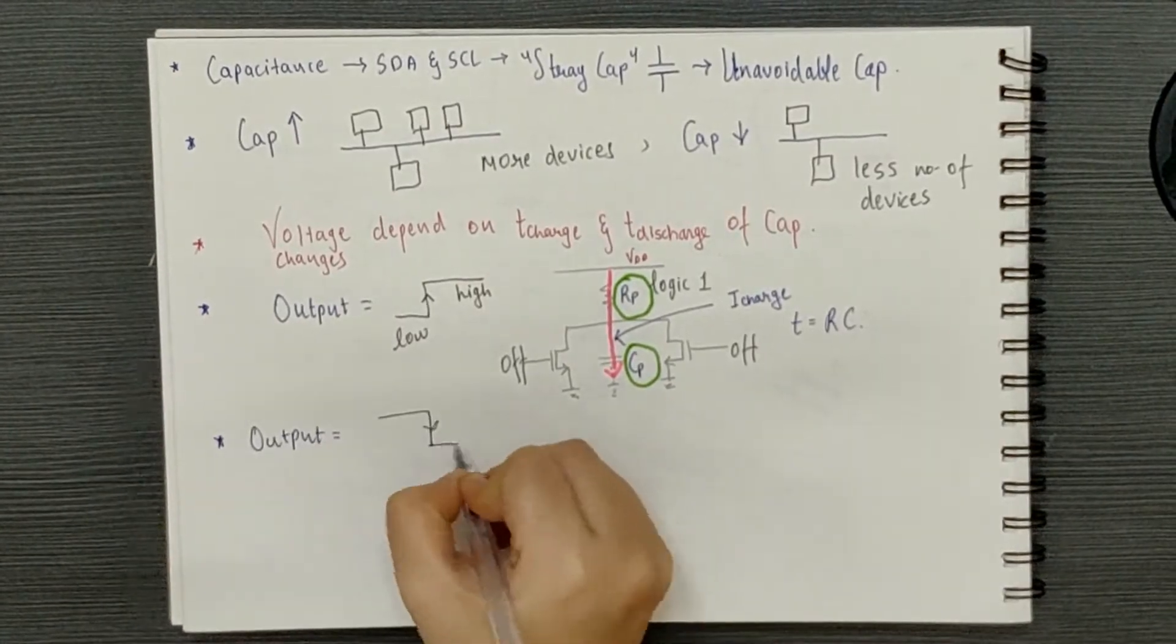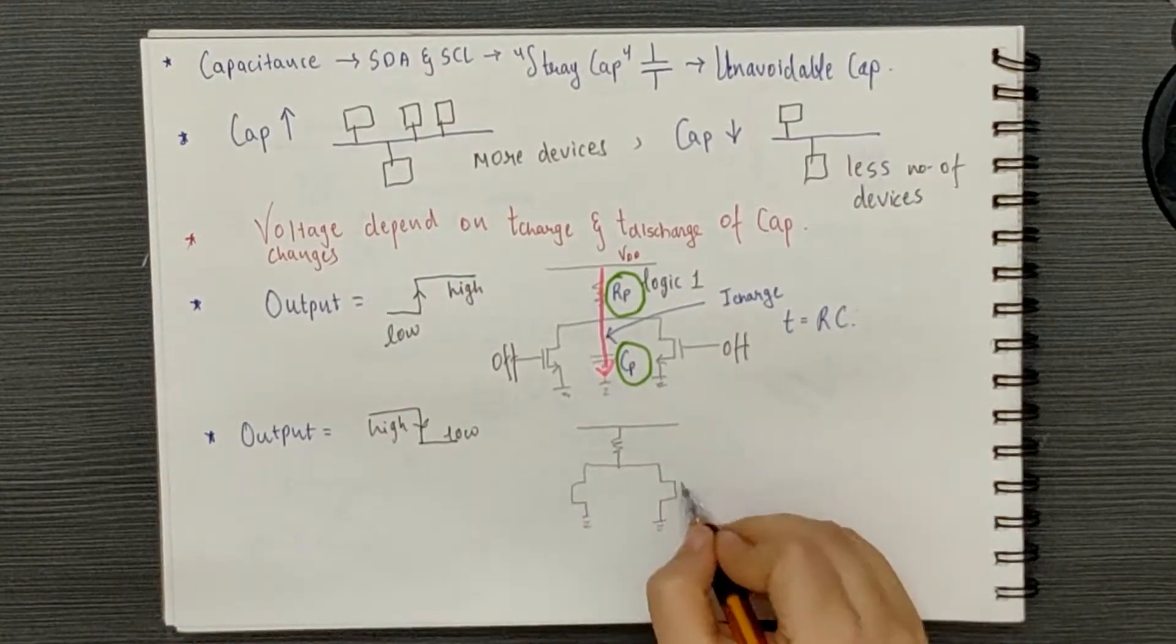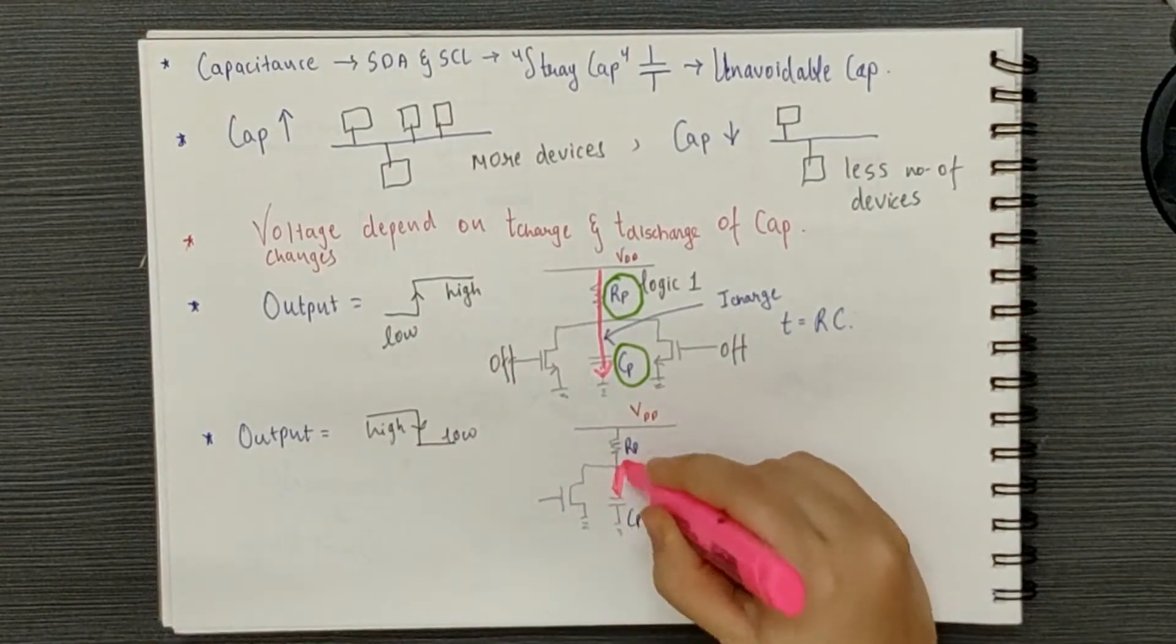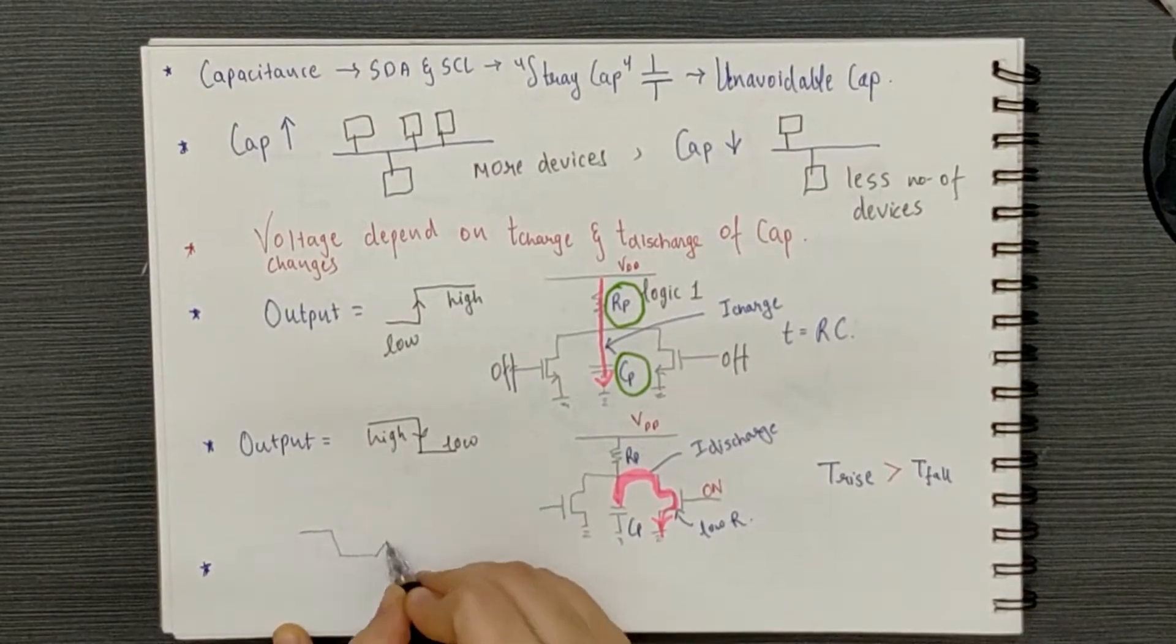Thus, obviously, the rise time will be significantly slower due to the high value of pull-up resistor than the fall time which is dependent on the low impedance of NMOS transistor. So, this results in the classic I2C sawtooth waveform.